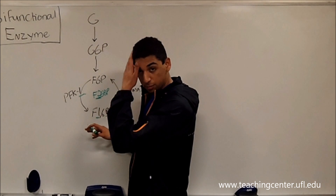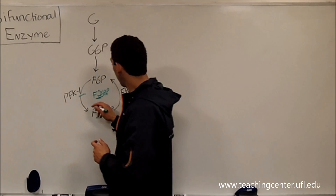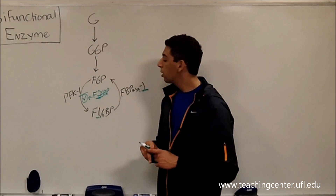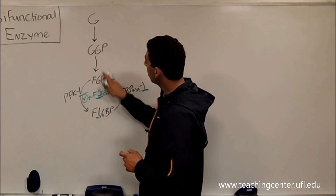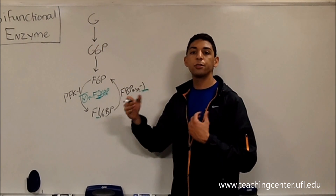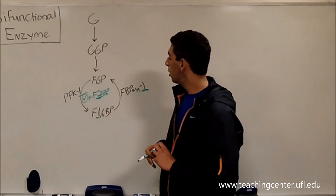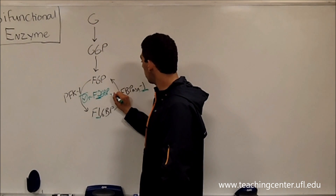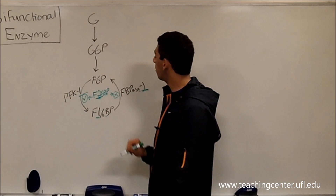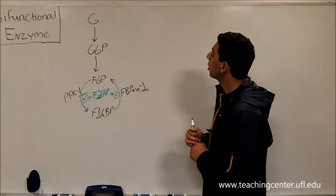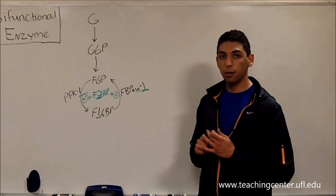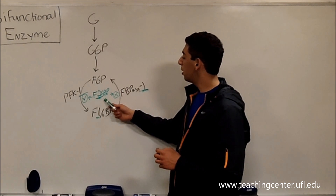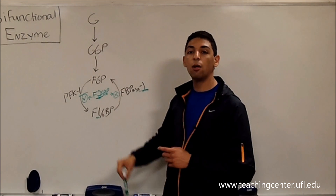Fructose 2,6-bisphosphate is a molecule that activates the forward reaction by activating PFK1. Fructose 2,6-bisphosphate allows glycolysis to continue and actually promotes it. The regulatory molecule promotes the forward reaction and actually inhibits the backwards reaction. Just remember that fructose 2,6-bisphosphate is a molecule your body makes when it wants to make glycolysis go forward.